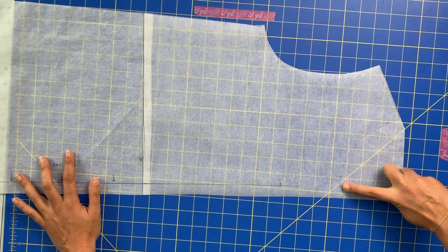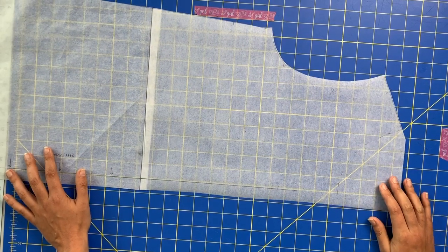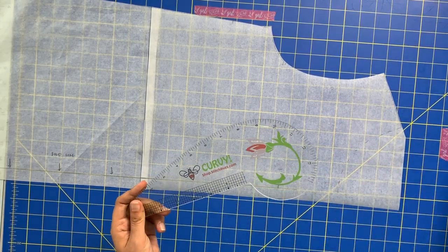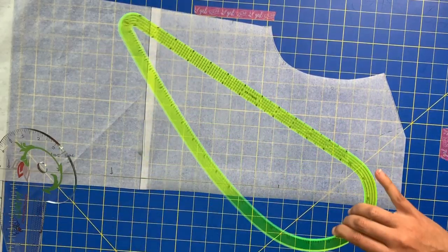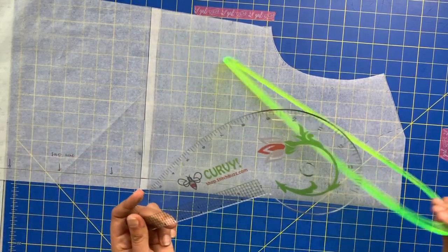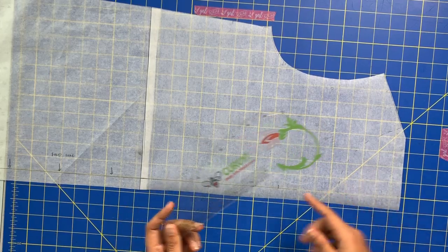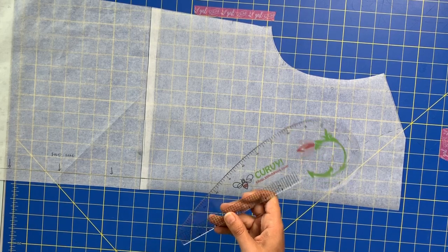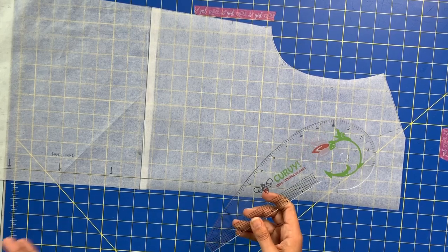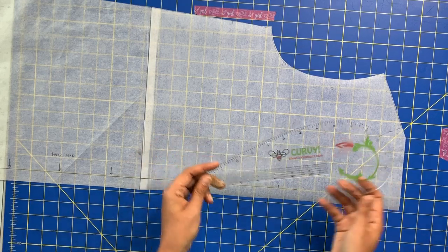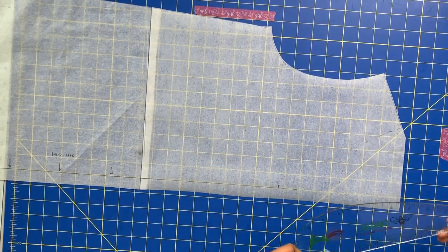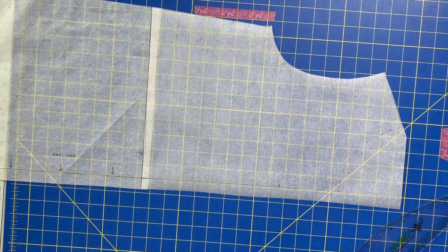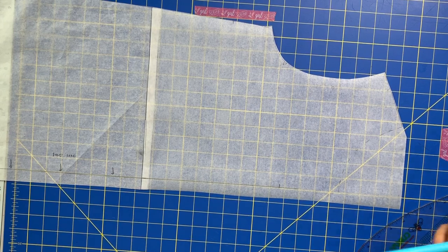This dotted line here or dashed line here was the original neckline. So using the curvy ruler, if you happen to have the seam allowance ruler, you can also use that, but the curvy ruler is really intended for this specific alteration and a bunch of other ones. I'm going to have more information on the curvy ruler. It's going to get its whole video. I'm going to show you all kinds of different alterations that this one ruler can do. But for today, we're going to be using it to lower and scoop out our neckline. I'm going to get a marker that you guys can see better.